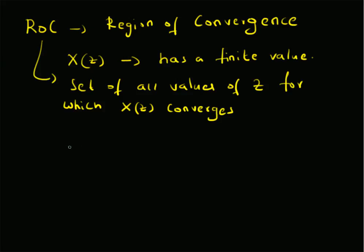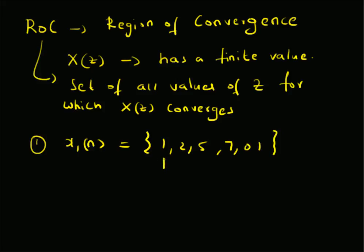Let us look at some examples. Consider a signal x1(n) given by the sequence {1, 2, 5, 7, 0, 1} where n equals 0 corresponds to the value 1. The Z-transform X(z) is given by the sum from n equals 0 to 5 of x(n) z to the power minus n.